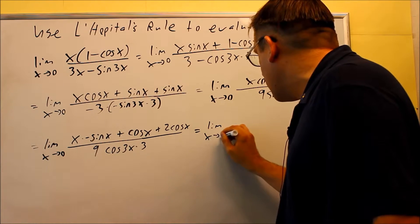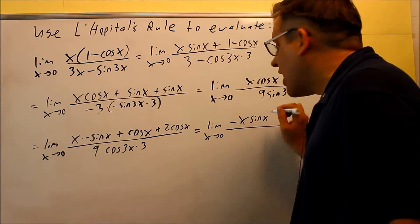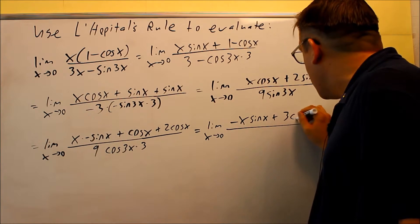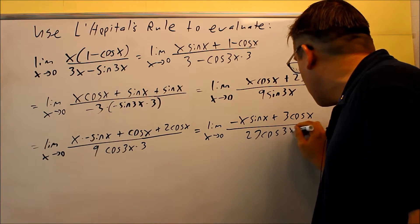Okay, limit x goes to 0. We're going to do negative x sine x, plus 3 cosine of x. And the bottom, we have 27 cosine 3x.